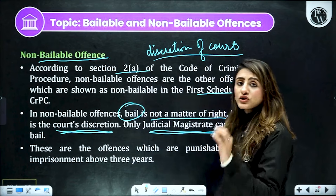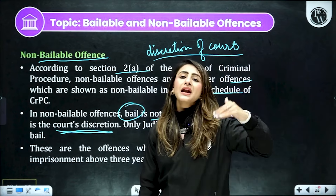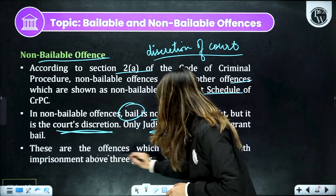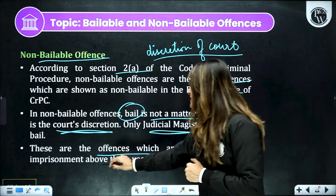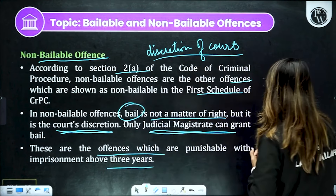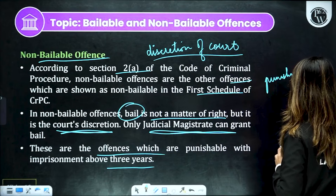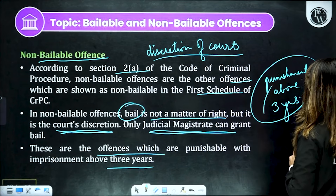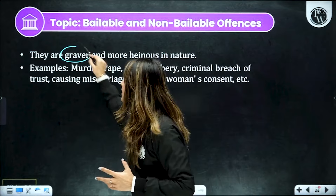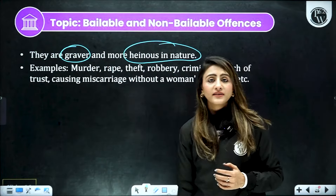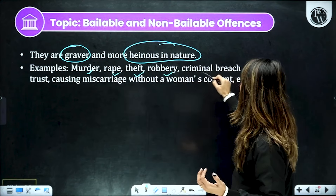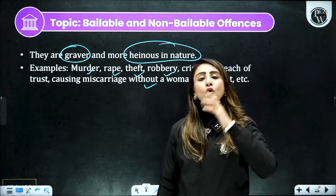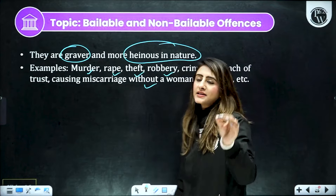According to section 2(a), non-bailable offenses are those which are given in the first schedule. Non-bailable offense mein bail milna aapka haq nahi hota, but ye court ki marzi hoti hai — discretion ka matlab hai court ki marzi. Judicial magistrate hi sirf grant kar sakta hai — yeh important point hai. Matlab sirf woh magistrate jo judicial magistrate ki position par hai, wohi bail ko grant kar sakta hai. These are the offenses which are punishable with imprisonment above 3 years — toh automatically jinnhi bhi crime ki punishment hoti hai above 3 years, woh automatically aapke non-bailable ki category mein jayenge. Kyunki ye offenses kaffi graver aur heinous maane jaate hain. Kuch examples hain — murder, rape, theft, robbery, criminal breach of trust, causing miscarriage without woman's consent. Bail milna court ka discretion hoga.